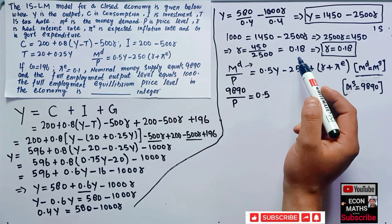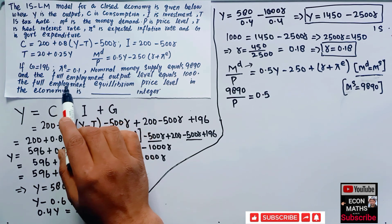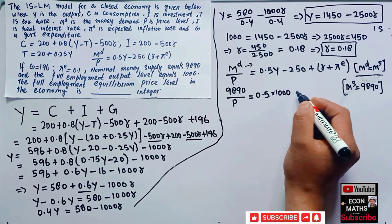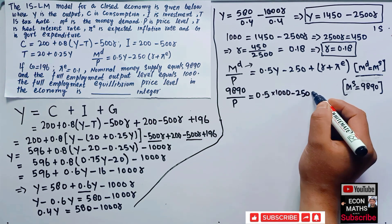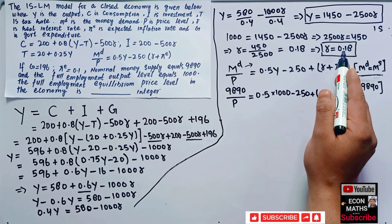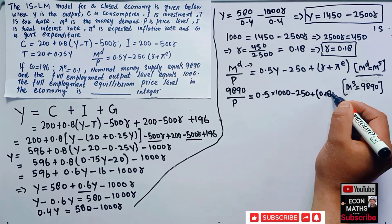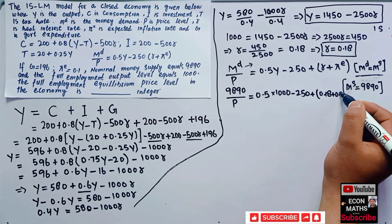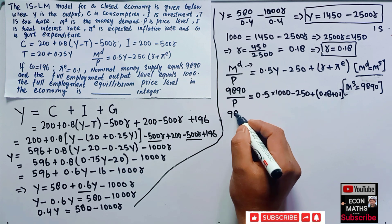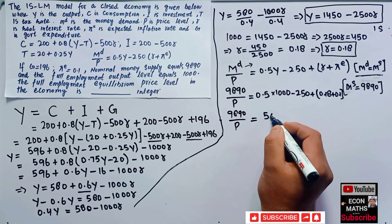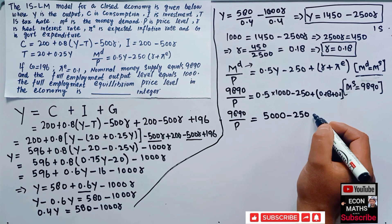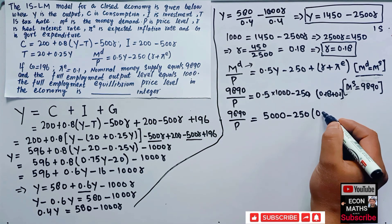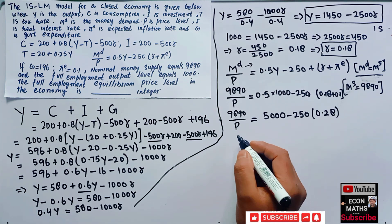Substituting known values: Y = 1000, r = 0.18, pi^E = 0.1. So: 9890/P = 0.5 × 1000 - 250 × (0.18 + 0.1) = 500 - 250 × 0.28 = 500 - 70 = 430.